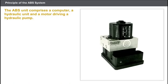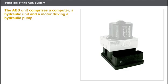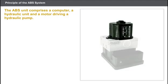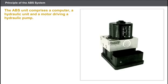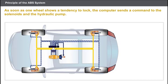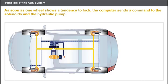The ABS unit comprises a computer, a hydraulic unit, and a motor driving a hydraulic pump. The computer receives information from each wheel sensor. As soon as one wheel shows a tendency to lock, the computer sends a command to the solenoids and the hydraulic pump. The computer also receives information from the brake pedal and informs the driver of a problem via a warning light on the instrument panel.